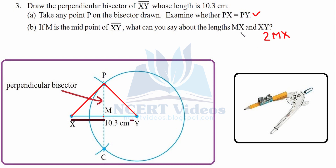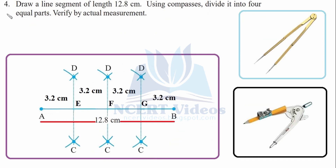That was question 3. Question 4: Draw a line segment of length 12.8 cm. Using compasses, divide it into four equal parts and verify by actual measurement. First, divide AB in half, then divide each half again — two times halved gives four equal parts.